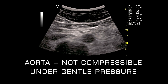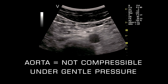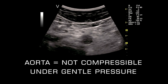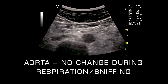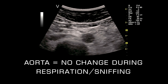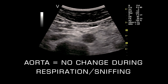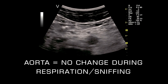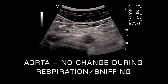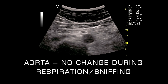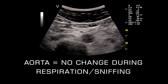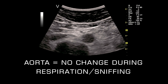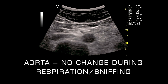The aorta is not compressible under gentle pressure, but the IVC is. The abdominal aorta shows no change in size with respiration or sniffing, whereas the normal IVC shows up to 50% or more change in diameter with respiration or sniffing.